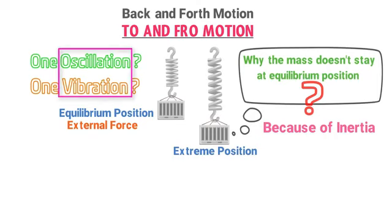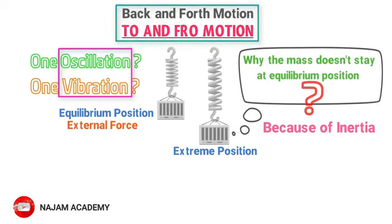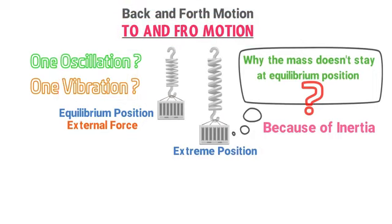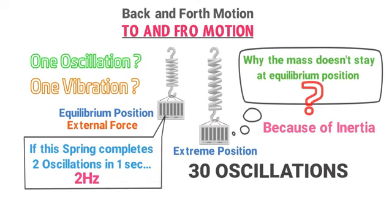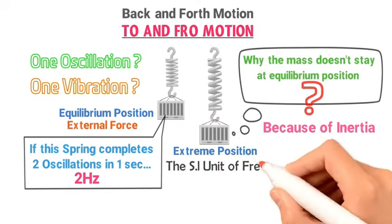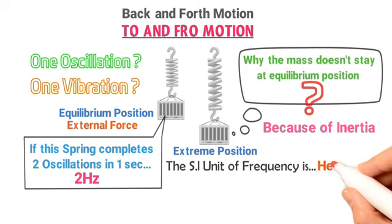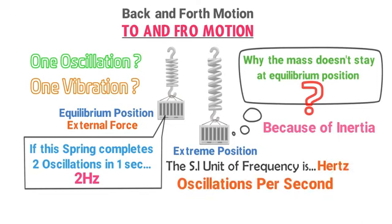Oscillation and vibration are both to and fro or back and forth motion. Regarding frequency: if the spring completes two oscillations in one second, its frequency is two hertz. If it completes 30 oscillations in one second, its frequency is 30 hertz. The SI unit of frequency is hertz, or oscillations per second, or vibrations per second.